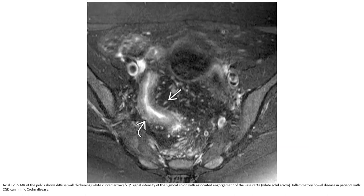T2 FLAIR MRI of the pelvis shows increased signal intensity of the sigmoid colon wall with associated engorgement of the vasa recta, consistent with inflammatory bowel disease in a patient with chronic granulomatous disease, mimicking Crohn's disease.